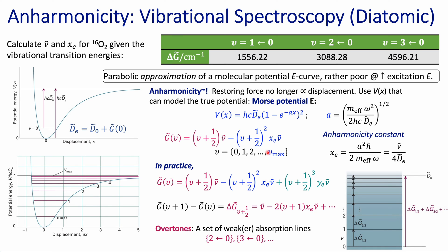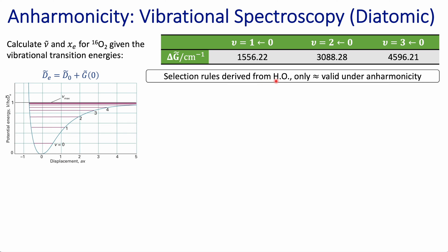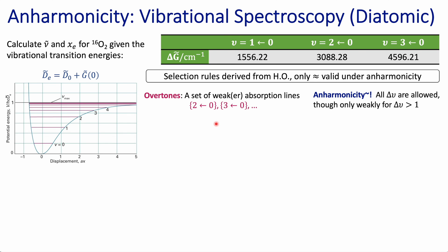Another interesting factor about anharmonicity is the presence of overtones — transitions that you would not expect thinking only in terms of the harmonic oscillator, because the harmonic selection rules require delta epsilon equals plus or minus one. But overtones are transitions from the ground state to the second excited state, ground state to the third excited state, etc., which is what we're looking at in this table. So this table is giving information about overtones. They do exist, but remember the harmonic selection rules were only an approximation. In the realm of anharmonicity, all transitions are in principle allowed, though intensities are much smaller when the change in quantum number is larger than one.